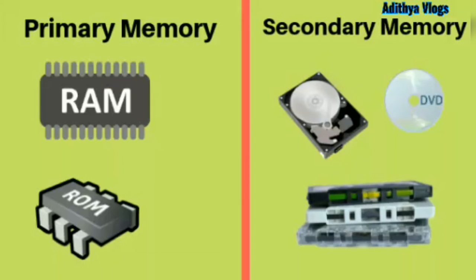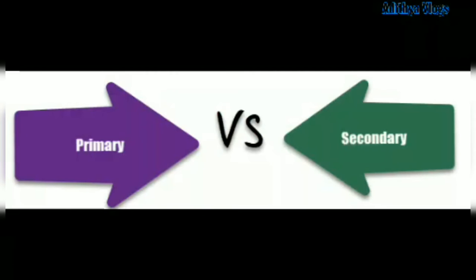Now let's discuss the topic of secondary memory. Sometimes there is much more information than a computer can save on its primary memory devices, and sometimes data needs to be saved for later use. In that case, data is stored on secondary memory devices which are outside the computer. Secondary memory is also known as auxiliary memory.